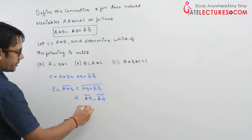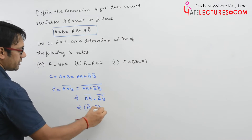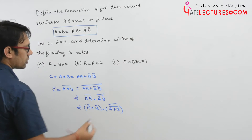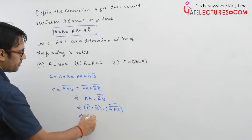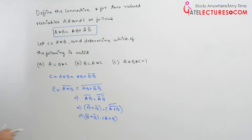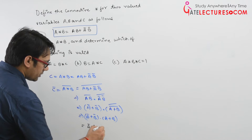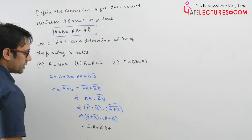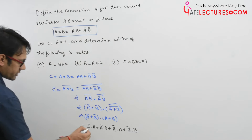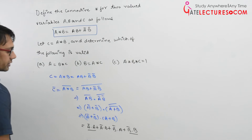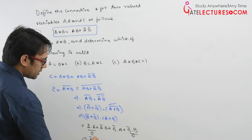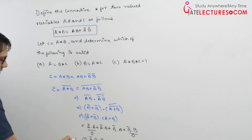Expanding further: (AB)' = A' + B', and (A'B')'' = A + B. So C' = (A' + B') · (A + B) = A'A + A'B + B'A + B'B. Since A'A = 0 and B'B = 0, we get C' = A'B + AB'. So C complement equals A'B + AB'.